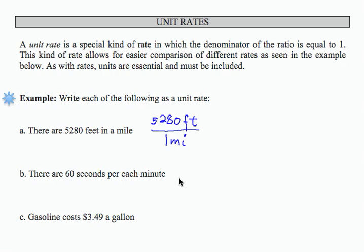For the second one, there are 60 seconds per each minute. So I would write 60 seconds divided by 1 minute. So there is a formal unit rate.